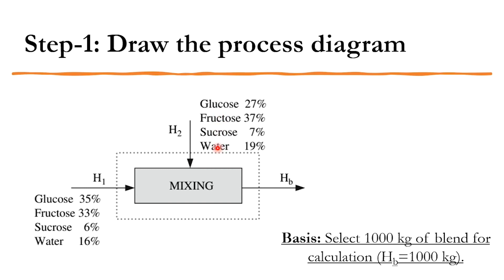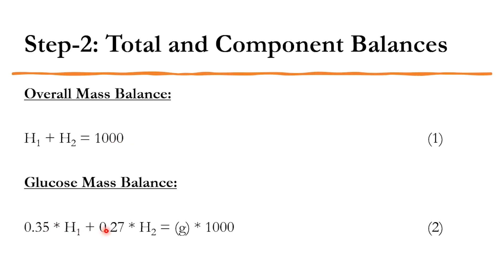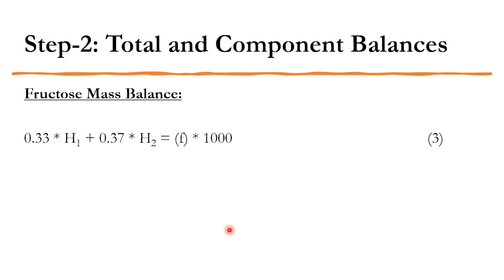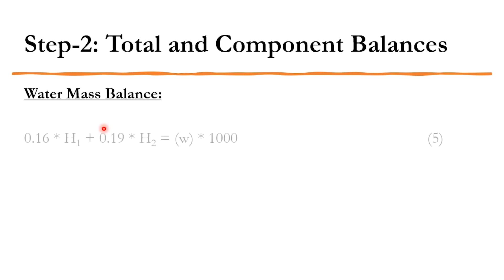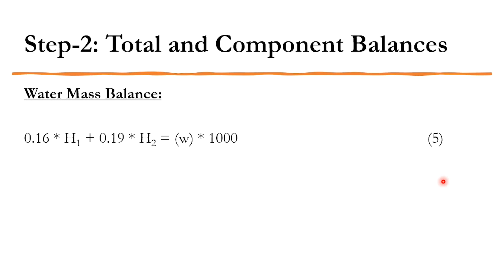The equations are: overall mass balance — H1 + H2 = 1000. Glucose balance: 0.35·H1 + 0.27·H2 = G·1000. Fructose balance: 0.33·H1 + 0.37·H2 = F·1000. Sucrose balance: 0.06·H1 + 0.07·H2 = S·1000. Water balance: 0.16·H1 + 0.19·H2 = W·1000. That gives five equations with six variables (H1, H2, G, F, S, W), so we need a sixth equation: G/W = 1.7 from the problem statement. Now six equations, six variables — degree of freedom is zero.